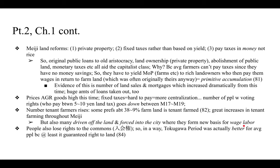People also lost rights to the commons, or iriaichi/iriaiken in Japanese. In a way the Tokugawa period was actually better for average people because it at least guaranteed a right to land. At the beginning of this class I asked whether capitalism has made things better — many people today assume things are generally getting better because of technology, but it is basically accepted fact among historians of Japan that at least at this time things did not get better for average people.